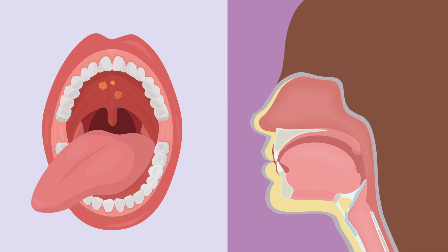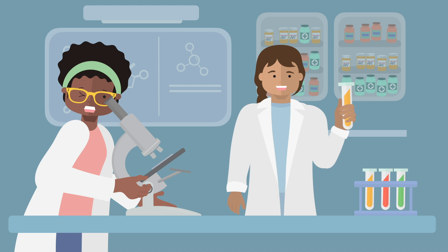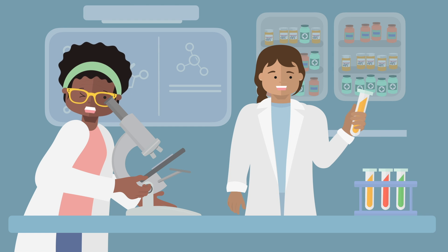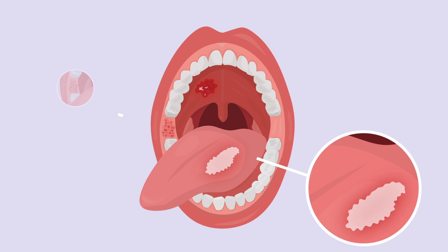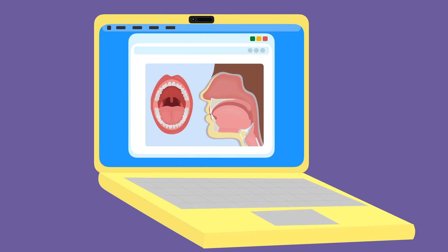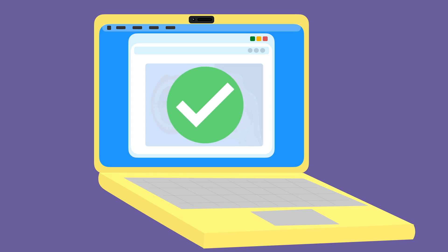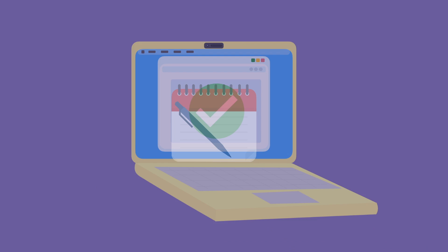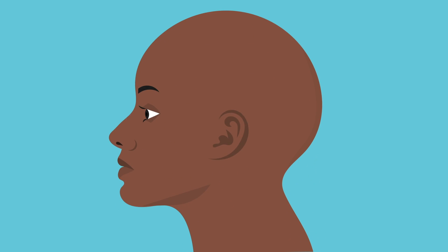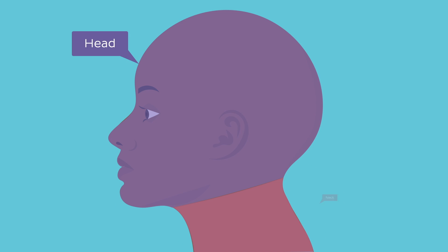Although cancers of these two regions share some similarities, they don't necessarily have the same biological behaviour. In this video, we're going to talk about cancers arising in the oral cavity and leave the oropharyngeal cancers for another time. Now that we understand the anatomical details, let's take a closer look at oral cancer. The first important thing to note is that oral cancer is the most common form of cancer affecting the head and neck regions.